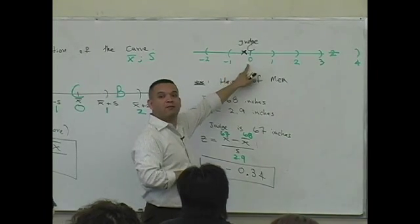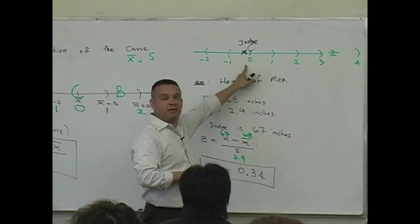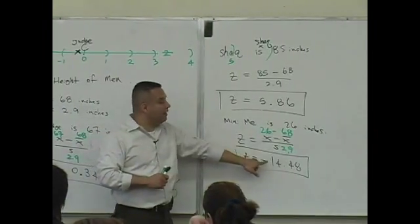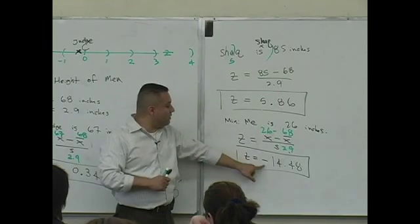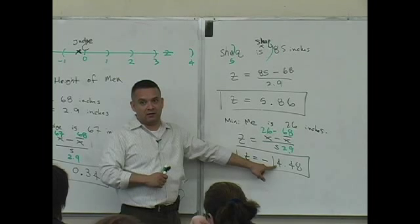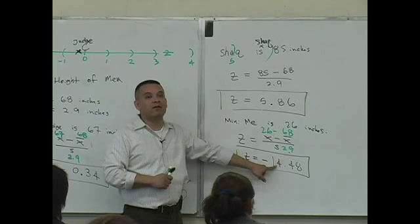Anything that's negative is below that center, below the mean. Anything positive is above it. So you can describe this value as being more than 14 standard deviations below the mean.